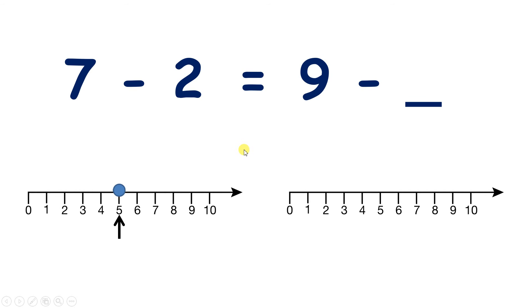And I need both sides of the equal sign to give me the same number. So I need to think 9 minus something is 5. So let's start on 9. How many jumps back do we need to get to 5? Well, we need 1, 2, 3, 4 jumps. So our answer is 4.